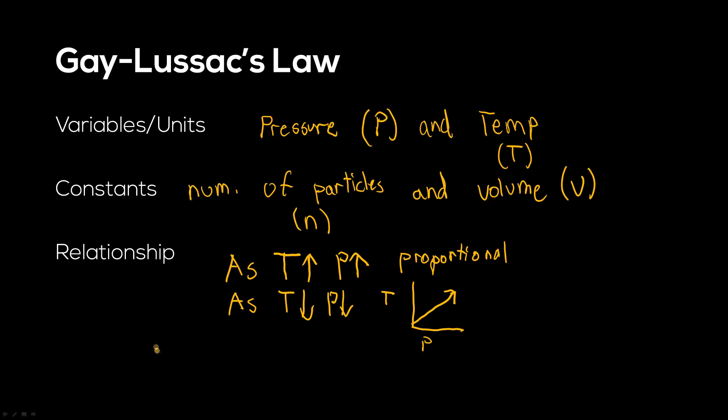Let's look at why this is true with particle diagrams. The first diagram has three particles bouncing around at the same speed. These two diagrams are at the same volume. If we increase the temperature of this diagram, the particles start speeding around a lot faster.